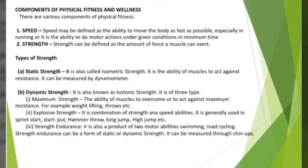The next component is strength. Strength is a conditional ability. It is a direct product of muscle contraction caused by the neuromuscular system. It is the ability of muscles to overcome resistance. Strength can be defined as the amount of force a muscle can exert. Strength is divided into two parts: static strength and dynamic strength. Static strength, also called isometric strength, is the ability of muscles to act against resistance and can be measured by a dynamometer. Dynamic strength, also known as isotonic strength, is classified into three categories: maximum strength, explosive strength, and strength endurance.